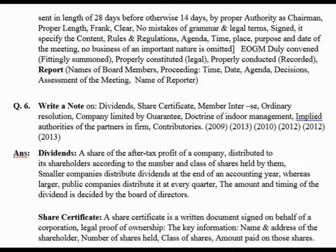Dividends are distributed to shareholders according to the number and class of shares held by them. Whoever holds more shares — say five thousand shares — will receive more dividend. Similarly, the class of share matters: riskier shares yield higher bonus, less risky shares yield less.